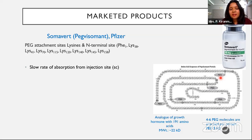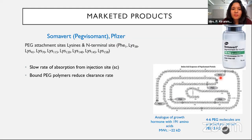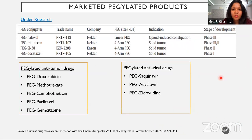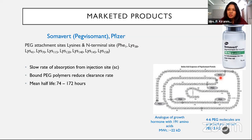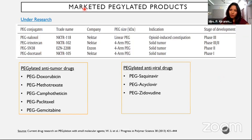The advantages of Somavert are similar to previous examples: slower rate of absorption from the injection site — this is also given as an SC injection — and bound PEG molecules reduce clearance. The mean half-life is very high at 74 to 172 hours. With these three examples, we've seen how PEGylation has enhanced pharmacokinetic properties and improved the efficacy of the molecule. Now let us look at some small molecules which are also PEGylated.